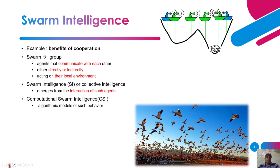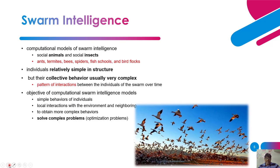What is computational swarm intelligence? It is nothing but algorithmic models of such intelligence or behavior. Examples of computational models of swarm intelligence are mostly social animals and social insects behavior — from there it has been derived. Examples include ants, termites, bees, spiders, fish schools, and bird flocks. These social animals and insects have been taken as inspiration to model computational swarm intelligence techniques. The individuals are relatively very simple, but their collective behavior is usually very complex.